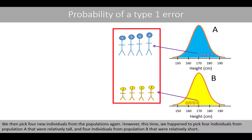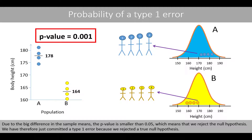We then pick four new individuals from the populations again. However, this time we happen to pick four individuals from population A that were relatively tall, and four individuals from population B that were relatively short. Due to the big difference in the sample means, the p-value is now smaller than 0.05, which means that we reject the null hypothesis. We have therefore just committed a type 1 error, because we rejected a true null hypothesis.